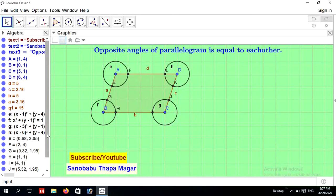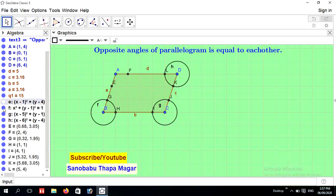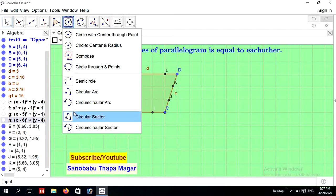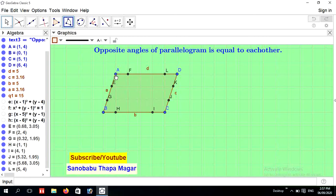After then hide the equation of the circle from algebra view. Now our process is to construct angles at every vertex. For that go to circle option or circle tool and select circular sector and place vertex and base. Repeat this process again at every vertex.